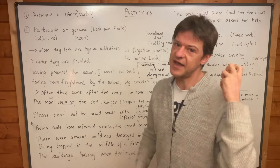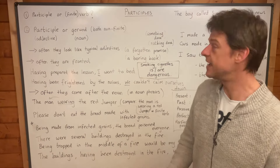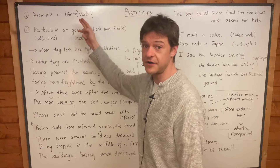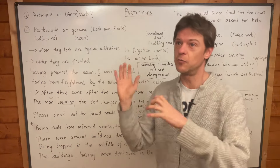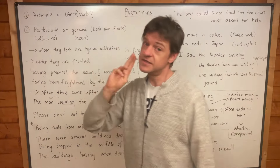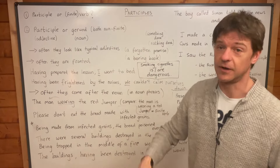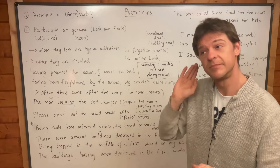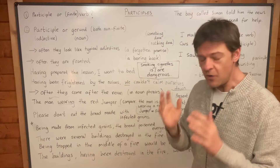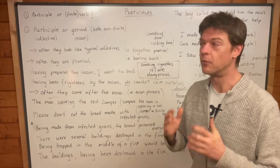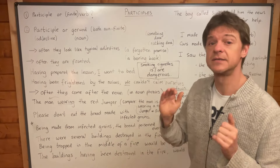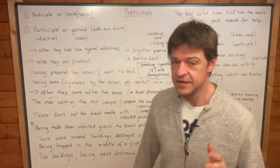For me, a verb always has a doer, and I think that's the best way to understand a finite verb. It's a word that has a doer, whereas a participle does not have a doer. It describes a noun, but it does not have a doer. And so we're going to find out what a participle is by looking at what a participle isn't.